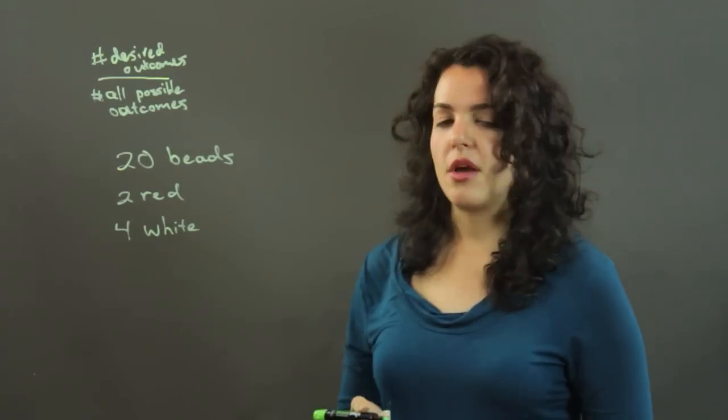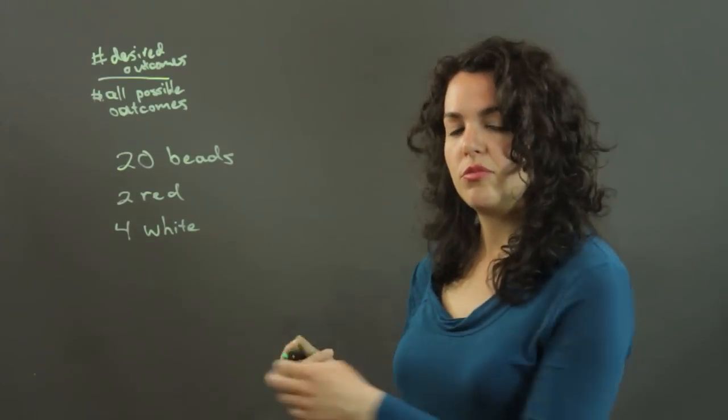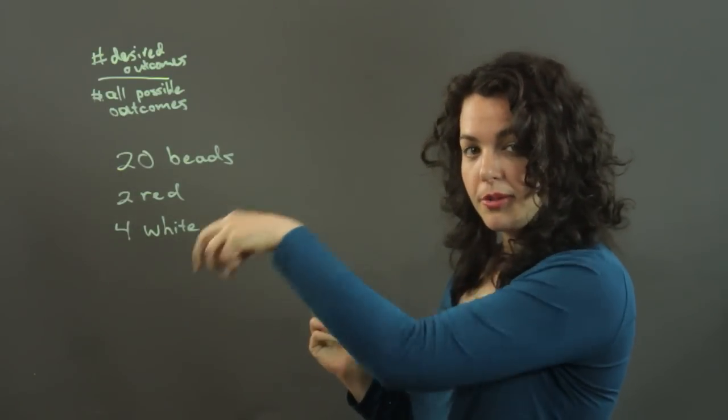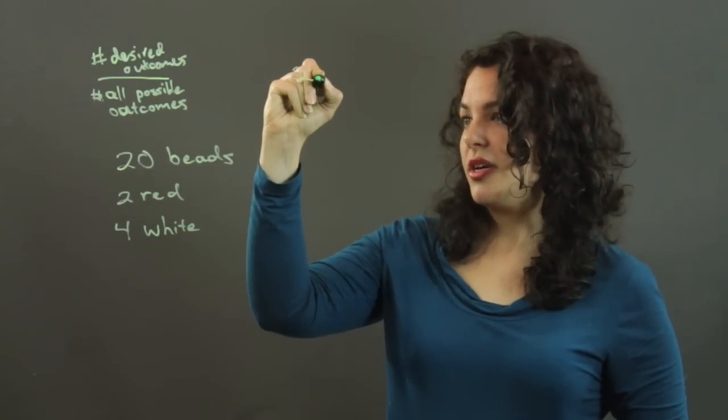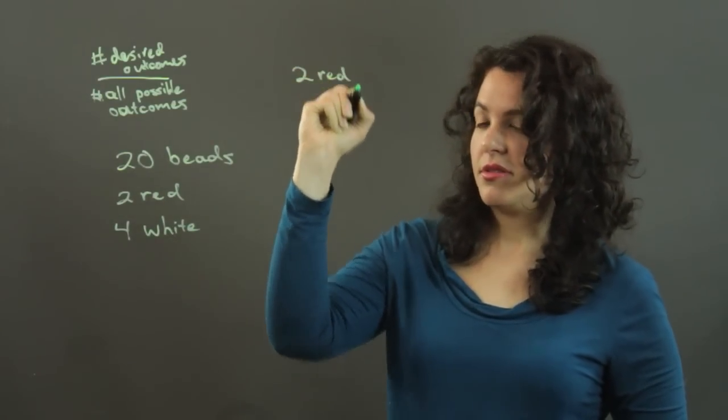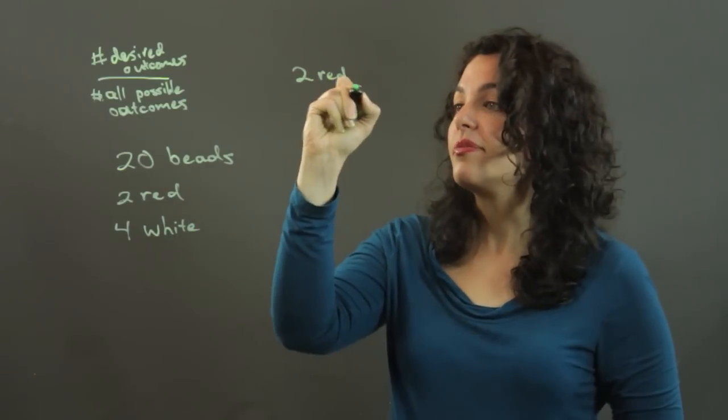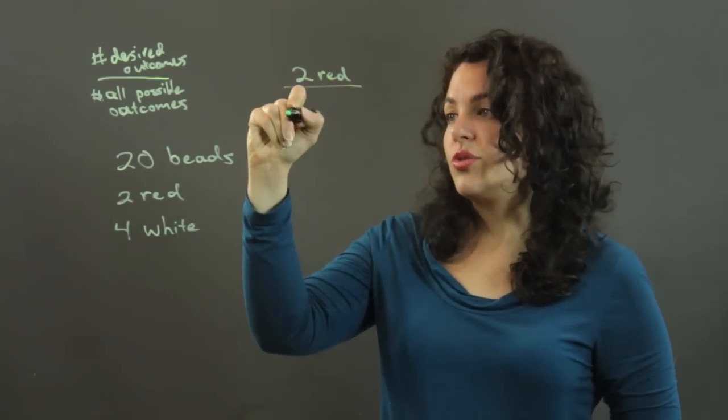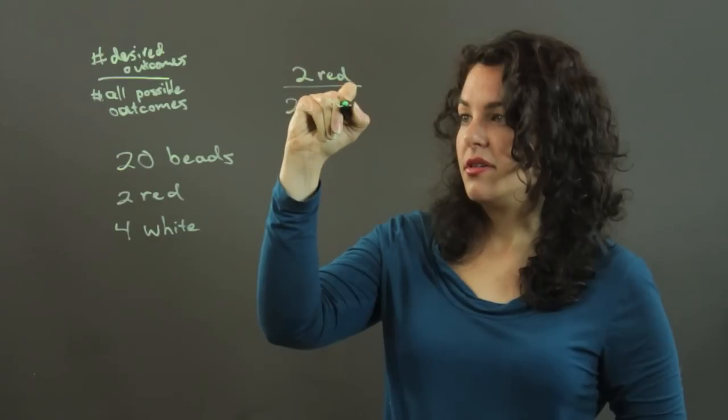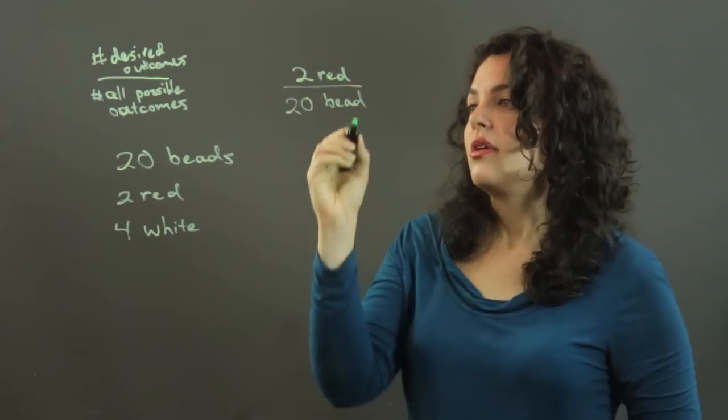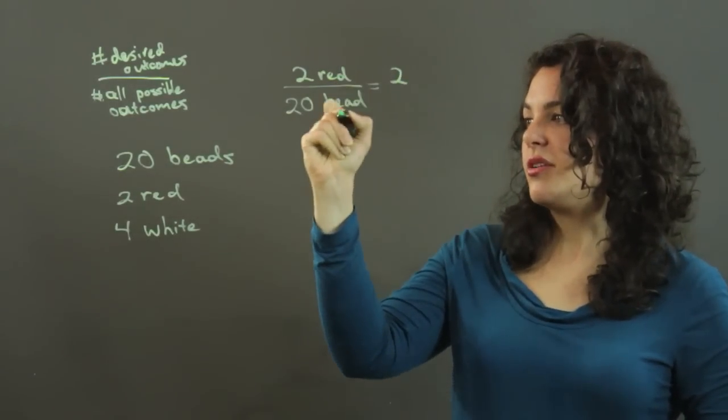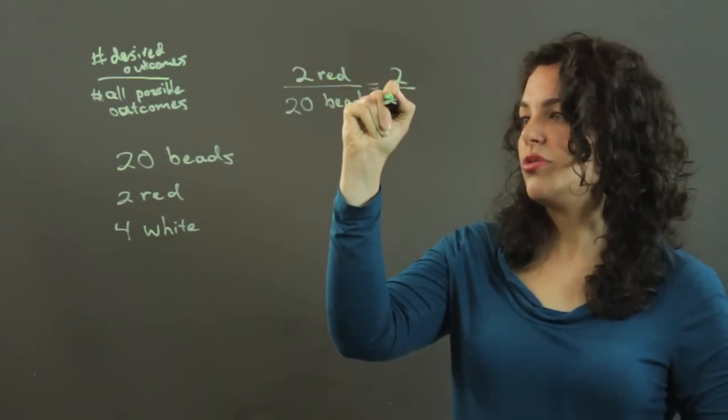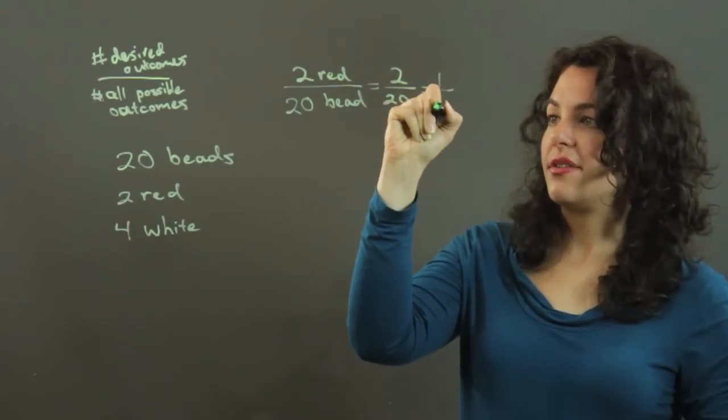The probability that we're going to pull a red bead, and we just randomly reach in and pull a bead out, is, well, we have two red beads that we can pick. We want either one of them, but we have a total of 20 beads. So our probability, 2 red over 20 beads, is just 2 over 20, which simplifies to 1/10.